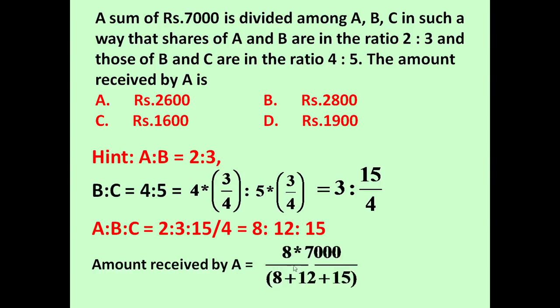Amount received by A equals 8 into 7000 divided by 8 plus 12 plus 15, because A gets 8 out of these 35. This equals 1600. So amount received by A is 1600.